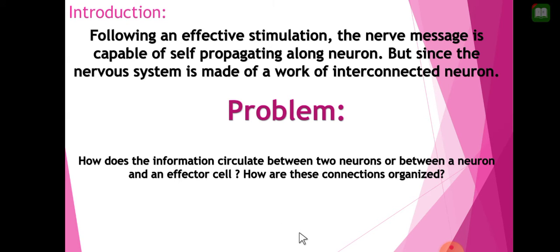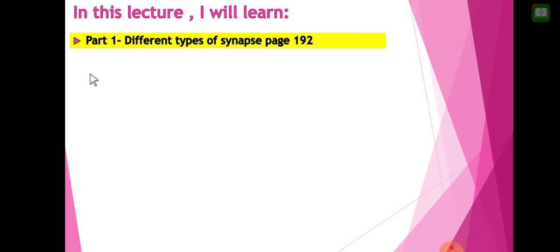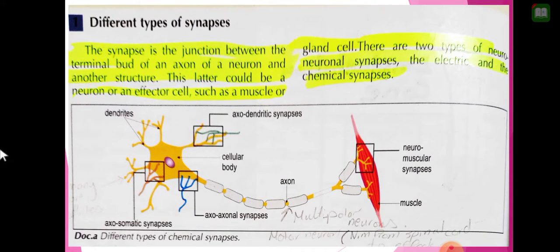How does a nervous message transfer from one neuron to another? It could transfer to an effector such as a muscle or a gland. How are these connections organized between neurons, or between a neuron and an effector cell? In this lecture, we will learn Part 1: Different Types of Synapse, page 192.